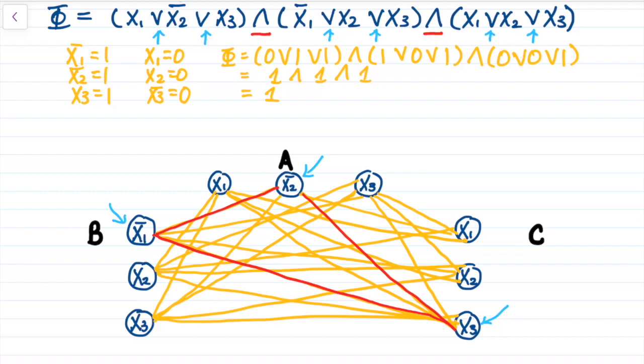Since in this clique, we used x1 bar, x2 bar, and x3, the values for these literals will be set to 1. This means that x1 equals 0, x2 equals 0, and x3 equals 1. Inputting these values into our original Boolean formula, we will see that the result would be 1. You can pick other cliques and try this yourself as practice.